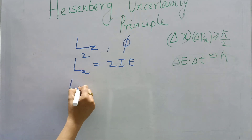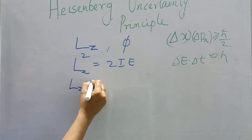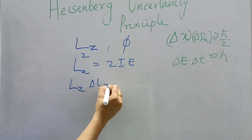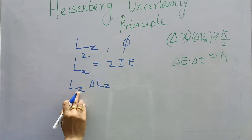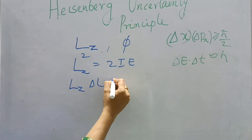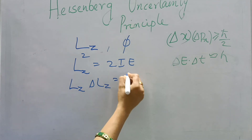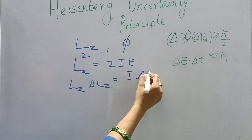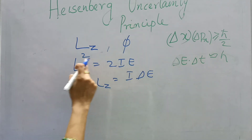We differentiate L² = 2I·E. Differentiating, we get 2L·delta L = 2I·delta E, which simplifies to L·delta L = I·delta E.